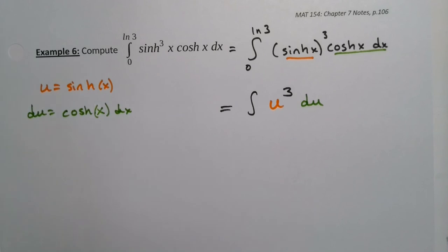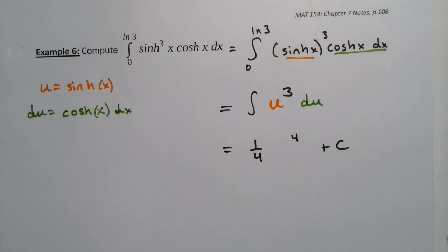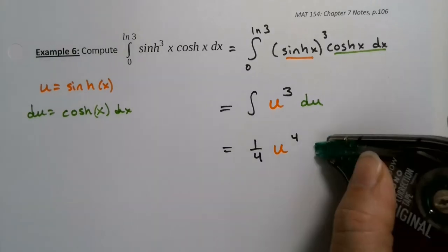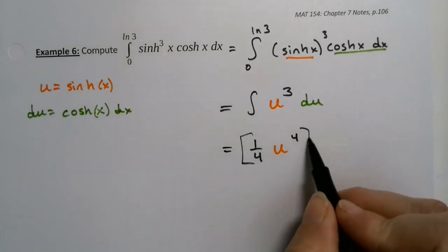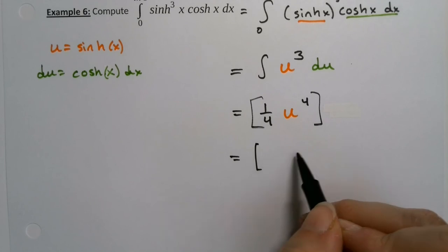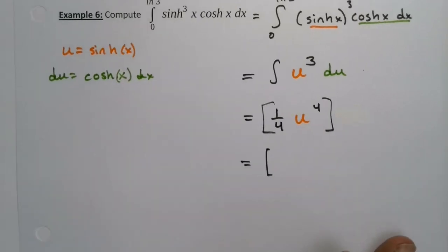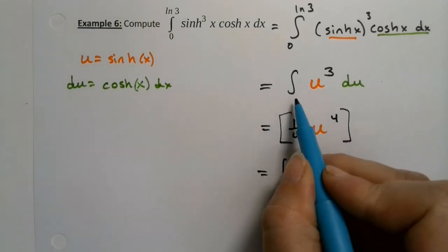When we integrate this we get (1/4)u⁴ — no plus C because it's a definite integral. Now we have a choice: do we back-substitute and use the original x-values, or do we change the limits to u-values? I'd argue we should almost always change our limits, as it's easier to do a definite integral substitution by changing the limits.